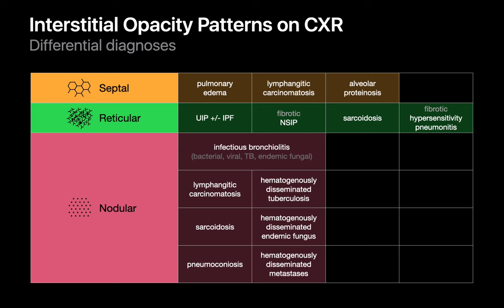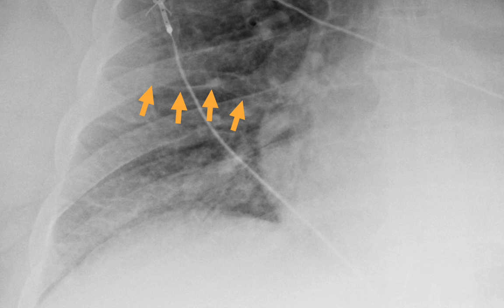Let's turn our attention to septal patterns of interstitial thickening. On a chest x-ray, the three-dimensional thick-walled polygons of the septal pattern may collapse into subtle lines discernible in some areas. We may see short one-to-two centimeter, one-to-three millimeter thin horizontal lines near the periphery of the lung, typically at the lung bases near the costophrenic angle, known as Kerley B lines. And we may see two-to-six centimeter thin radiating lines extending from the hilum in the middle or upper lung zones, known as Kerley A lines.